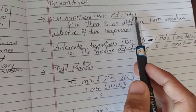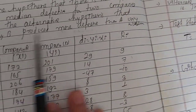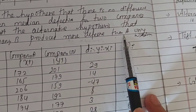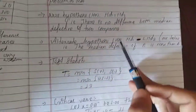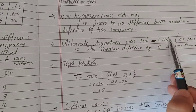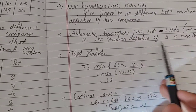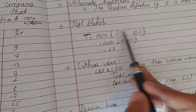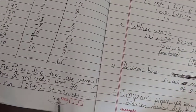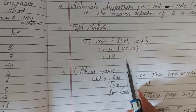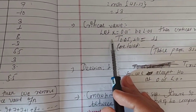The alternative hypothesis is that company B produces more defectives than A, so MD2 is greater than MD1. The test statistic T is the minimum of S plus and S minus, which is the minimum of 42 and 13. Therefore the test statistic T equals 13.